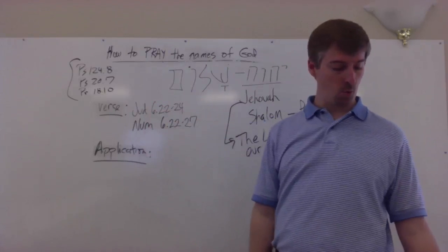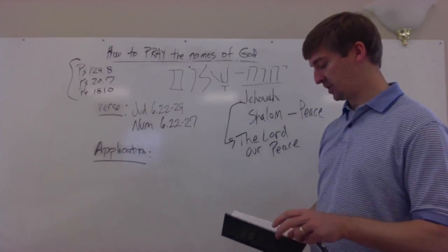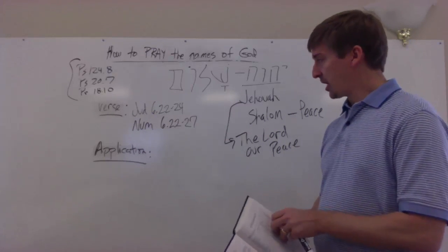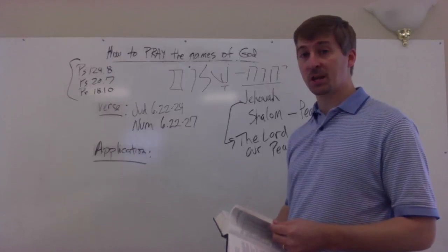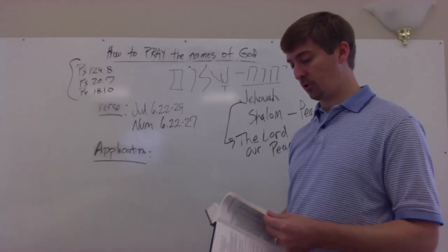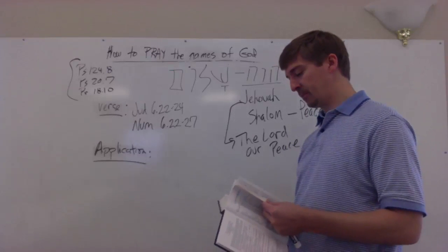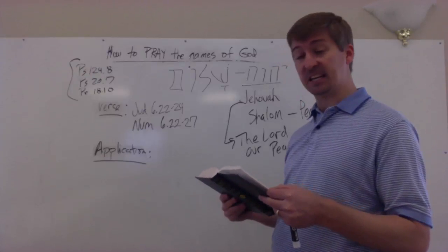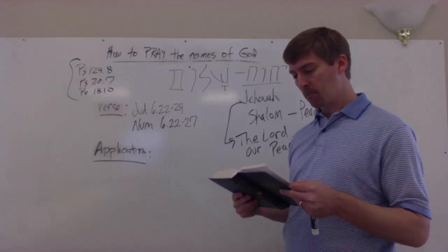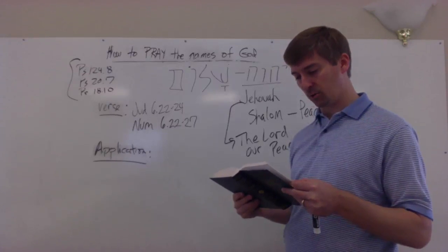These two passages, one of them is in the book of Judges, Judges chapter 6. Judges is the seventh book in your Bible: Genesis, Exodus, Leviticus, Numbers, Deuteronomy, Joshua, and Judges. Judges chapter 6, verse 22 through 24. Then Gideon perceived that he was the angel of the Lord, and Gideon said, Alas, O Lord God, for now I have seen the angel of the Lord face to face.